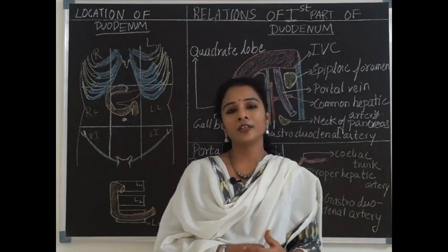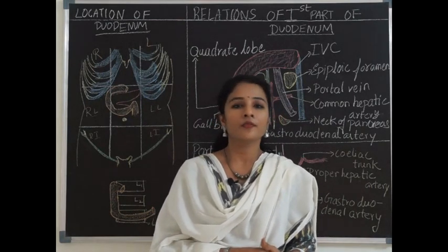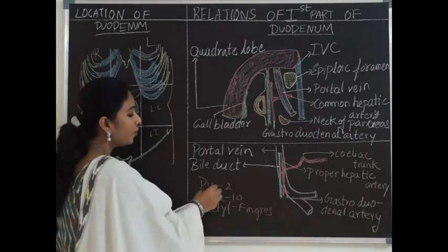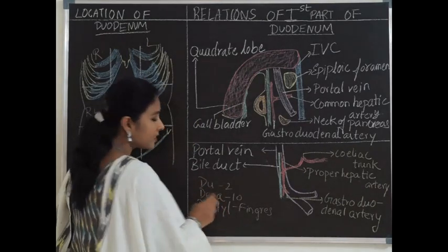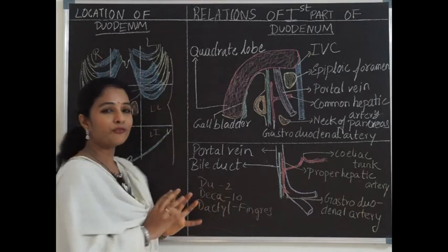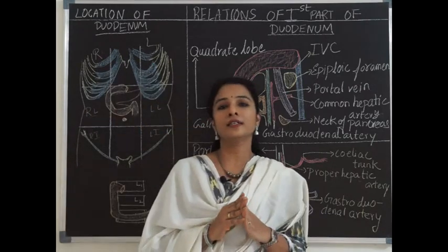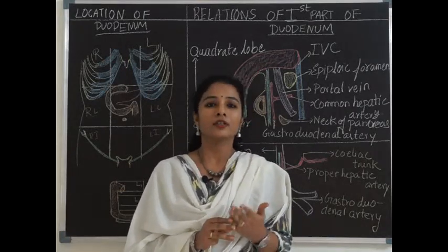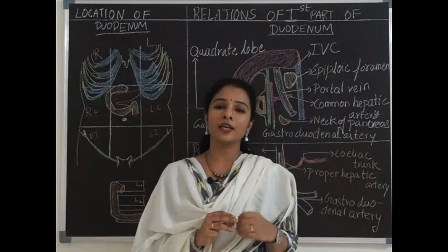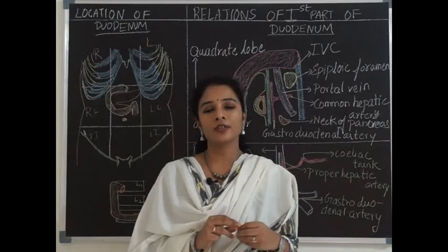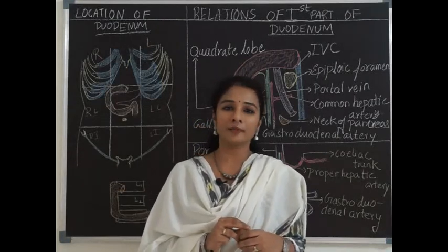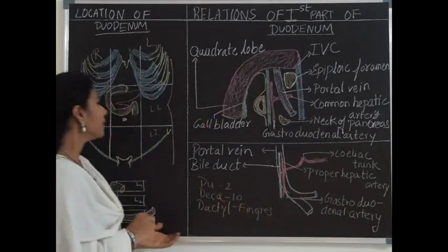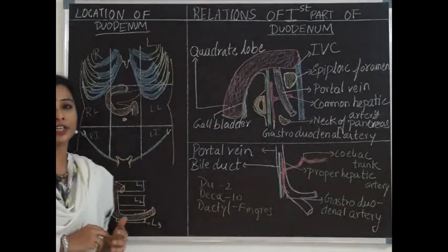Duodenum is a word derived from Latin, derived from 'du deca dactyl.' 'Du' means 2, 'deca' means 10, and 'dactyl' means fingers — so it is present with the length of 12 fingers breadth. The term duodenum was first used by Herophilus, an anatomist during 300 BC.